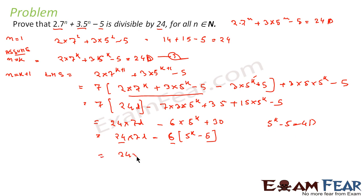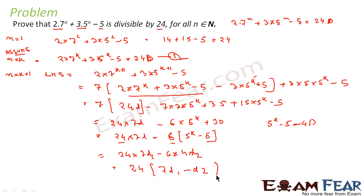So we can say the expression equals 24 into 7d₁ minus 6 into 4d₂. Taking 24 common, this becomes 24 into (7d₁ minus d₂), which is also a constant. Thus we have proved that for n equal to k plus 1, the expression equals 24 into some constant, meaning the statement is true for n equal to k plus 1.